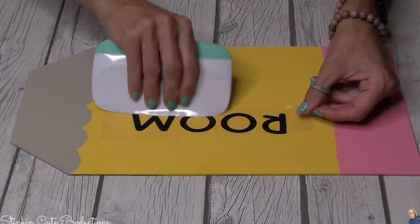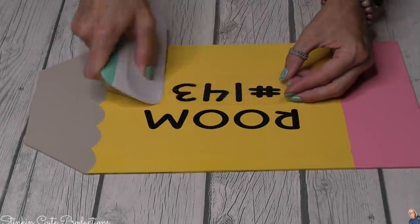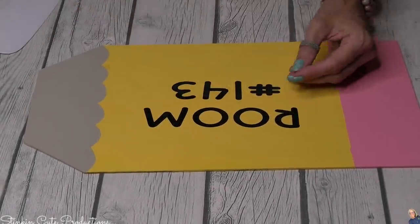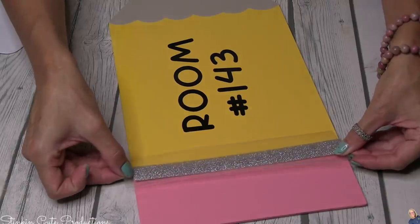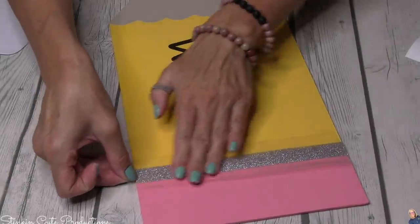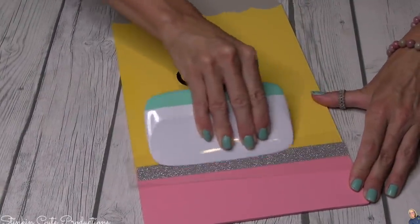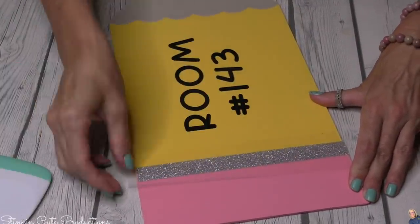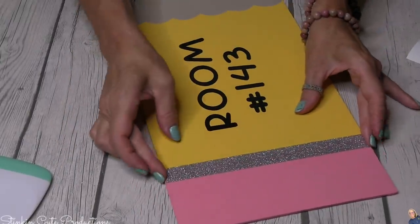With this one I'm just simply gonna add the room number to the center of the pencil. Since I had some silver glitter vinyl I decided just to cut a strip out to place between the eraser and the pencil itself, you know the silver thing that's on every pencil that holds the eraser. This is gonna work perfect for it.